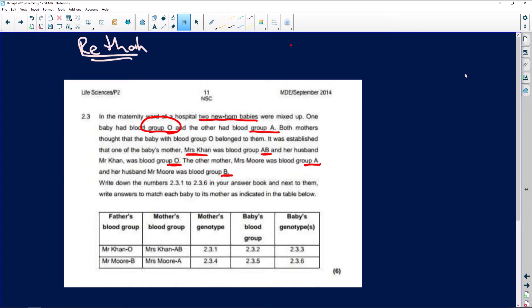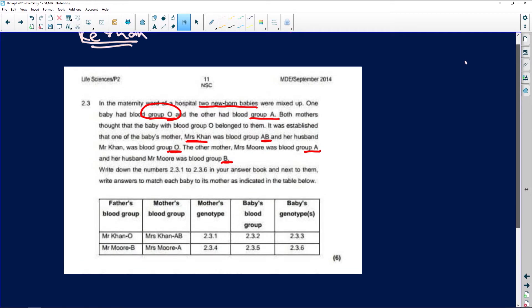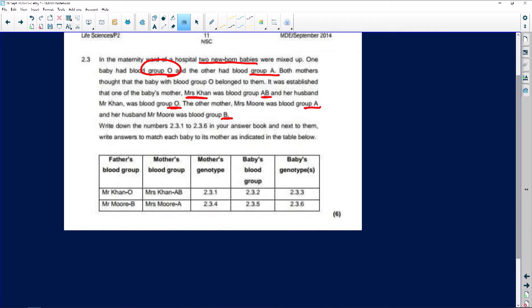So now what do they want us to do here? They want us to give the mother's blood group, Mrs. Khan, Mrs. Moore, their genotype, the baby's group and the baby's genotype. So you know what? This is what I'm going to do first. Let's just get some space here.